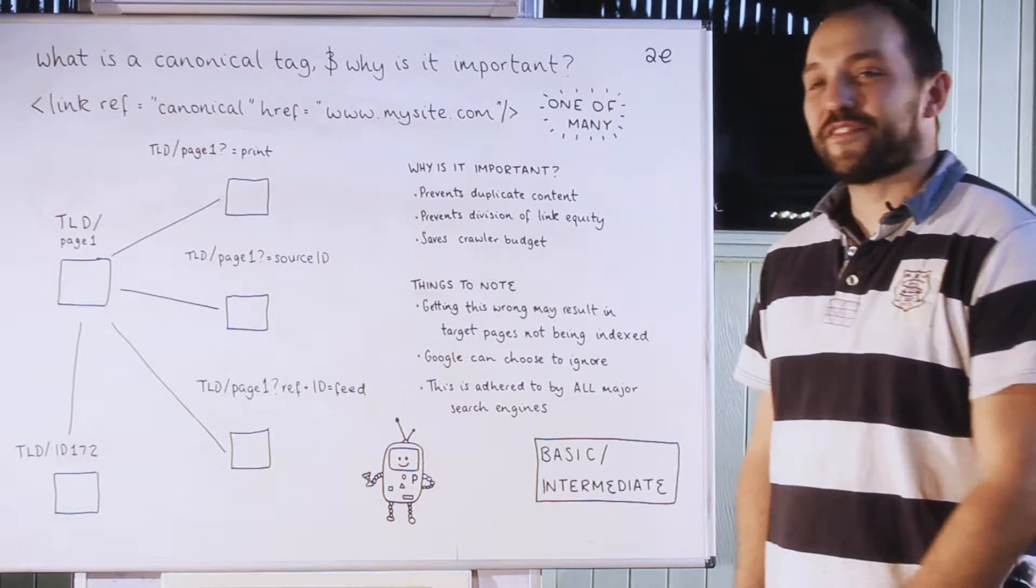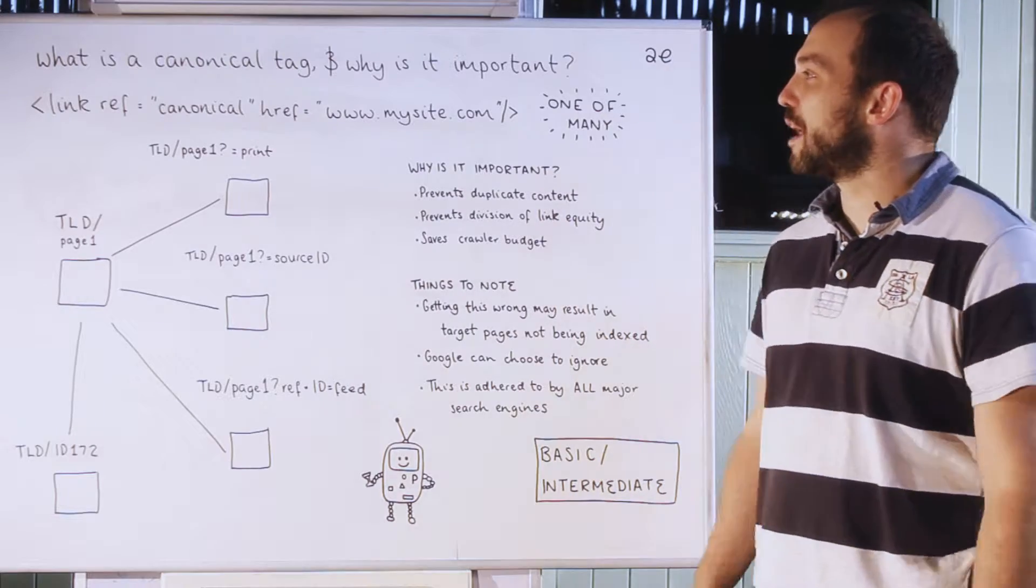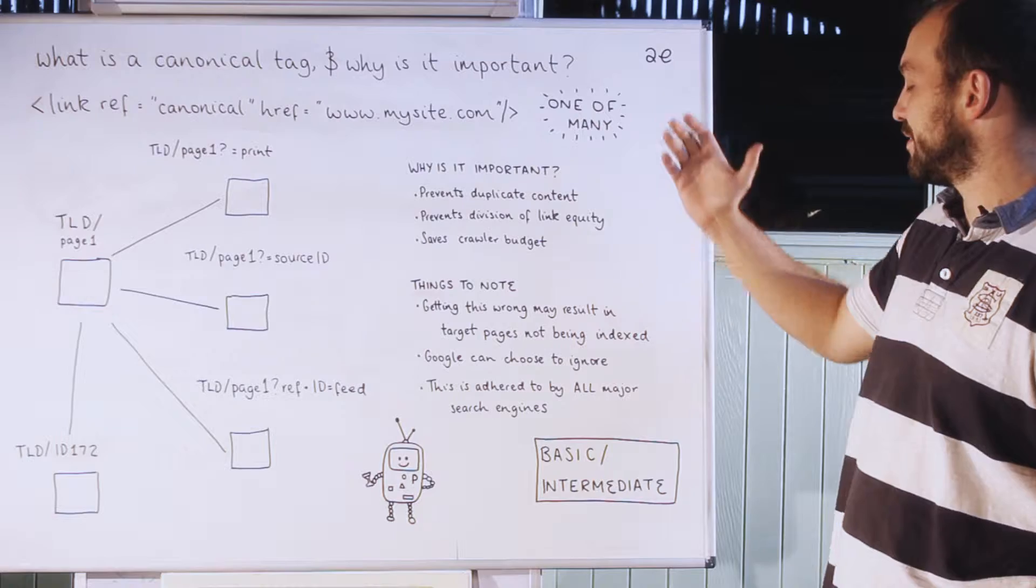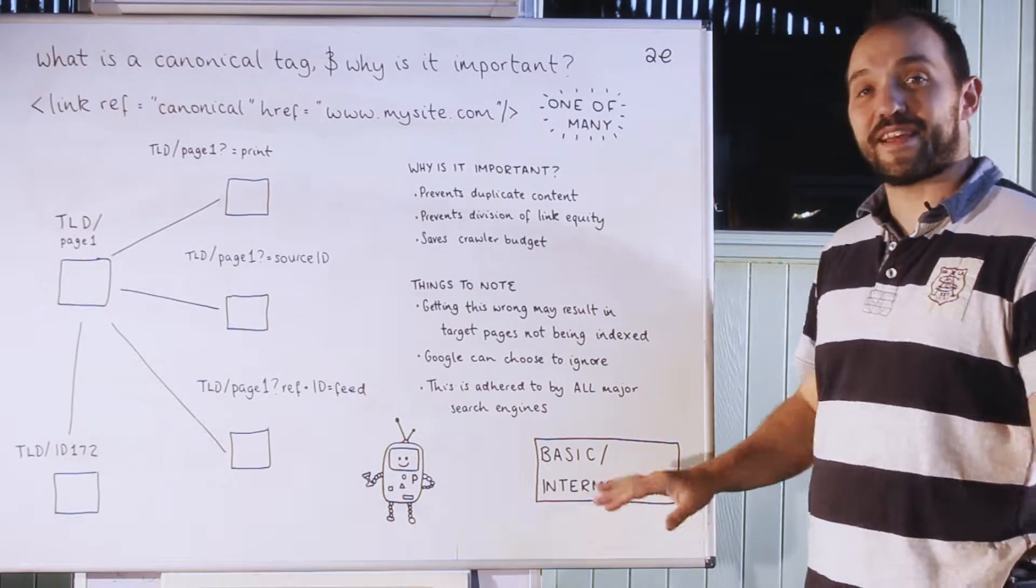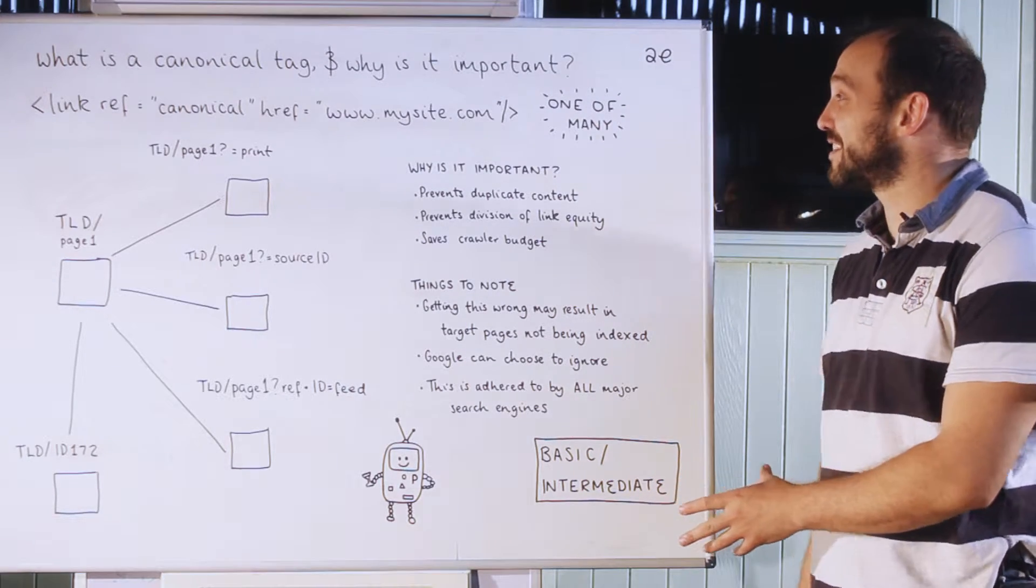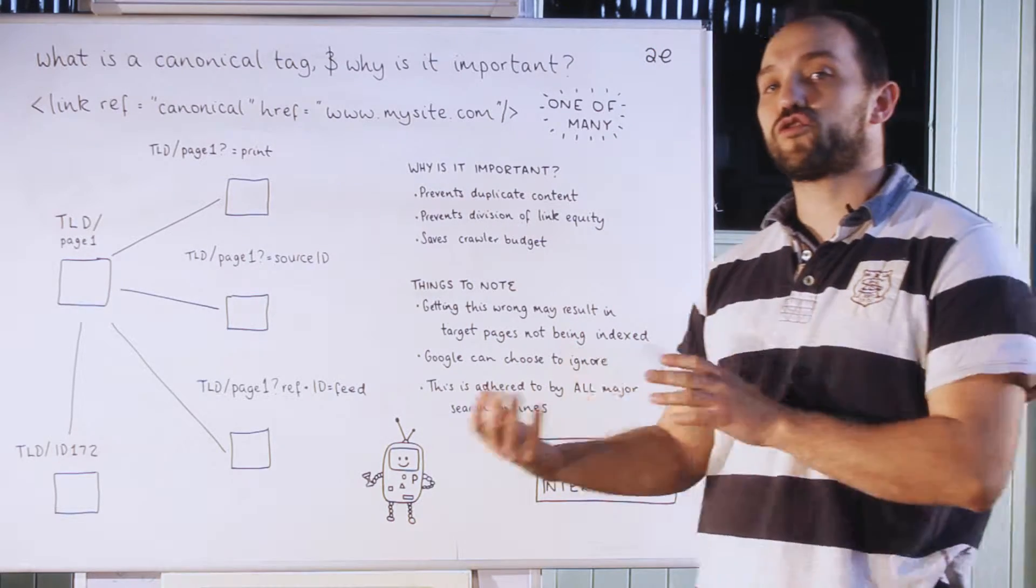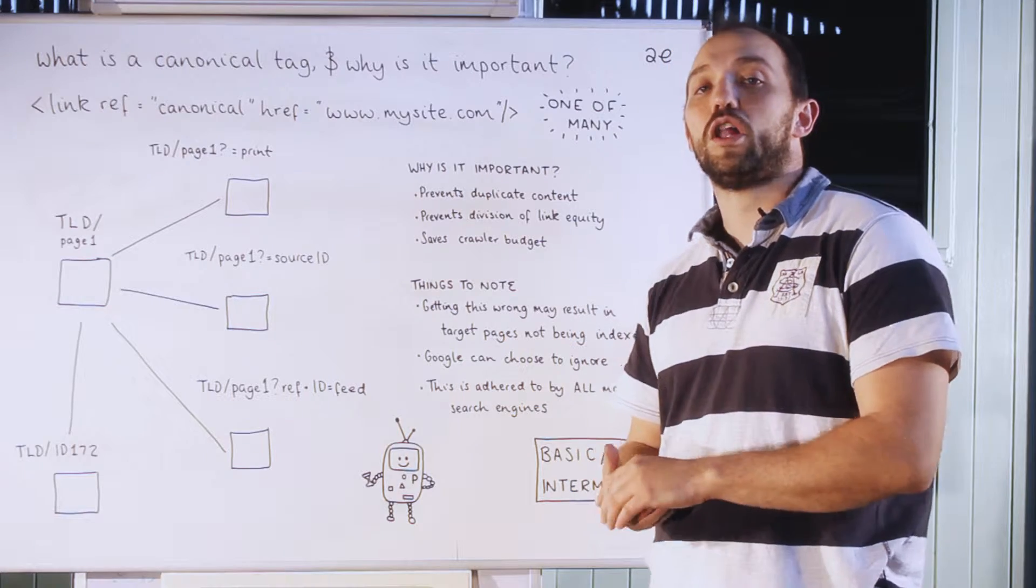Right, good morning Proto fans. Another whiteboard from us today. We're going to be talking about what is the canonical tag and why is it important. This is a basic to intermediate sort of level of SEO. So canonical tag comes from the maths meaning one of many, so it's the one true version of the page when you've got lots of duplicate versions of that page.